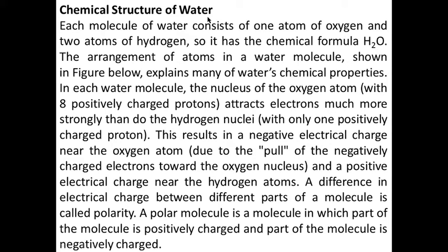Chemical structure of water: each molecule of water consists of one atom of oxygen and two atoms of hydrogen, so it has the chemical formula H2O. The arrangement of atoms in a water molecule, shown in the figure below, explains many of water's chemical properties. In each water molecule, the nucleus of the oxygen atom, with eight positively charged protons, attracts electrons much more strongly than do the hydrogen nuclei.